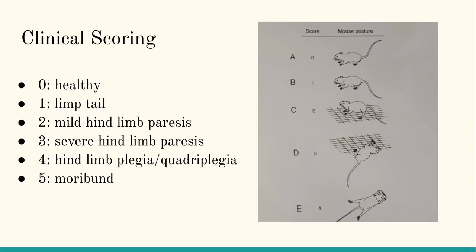To track disease in a lab setting, clinical scoring is used to quantify symptom progression. A score of zero is a healthy mouse, a score of one is a limp tail, scores of two and three are mild and severe hind limb paresis, a score of four is hind limb plagia or quadriplagia, and a score of five — which is unideal for lab settings — is when a mouse dies from the effects of the disease.